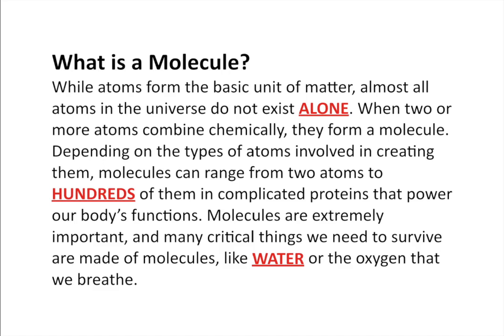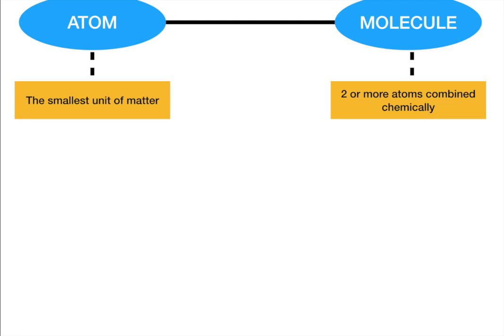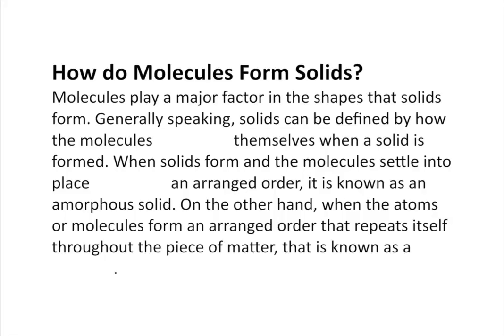Molecules and atomic bonding — you'll talk about more when you cover atomic bonding. Let's fill out the next part of our organizer: atoms are completely related to molecules because molecules are two or more atoms combined chemically. In the rest of this lesson we're going to talk about molecules in a solid state of matter — liquids and gases will come later. We'll talk about the forms that solids make based on how molecules arrange themselves.